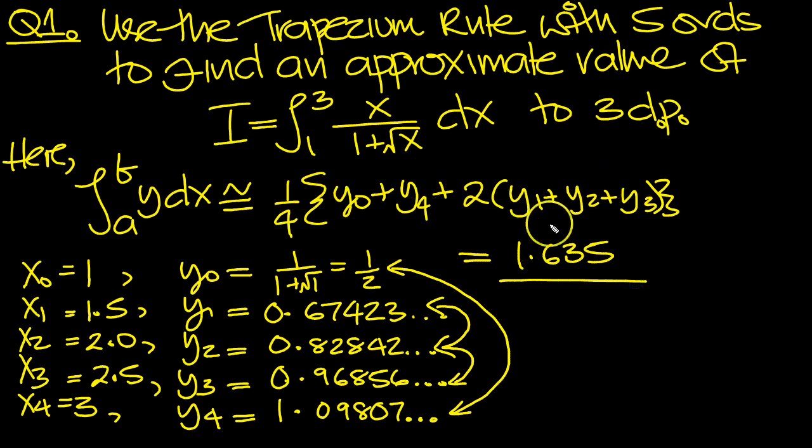And we would show our working, so we would write this in place, wouldn't we? The numbers in the places that we have there. We get the answer 1.635 to 3 decimal places.